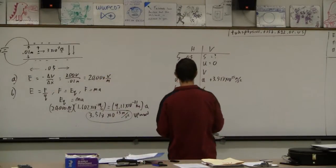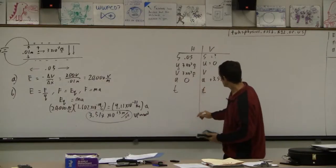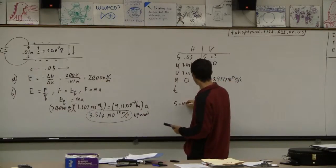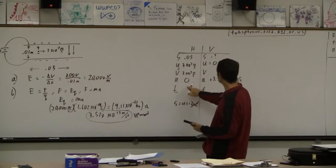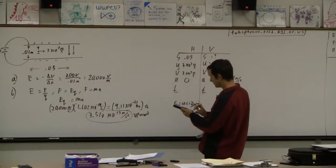And so now I just have to SUVAT. Remember, this side's really easy. It's always just S equals UT. I mean it's plus one half AT squared, but A is zero so that term's always zero. So T is going to be this divided by this.